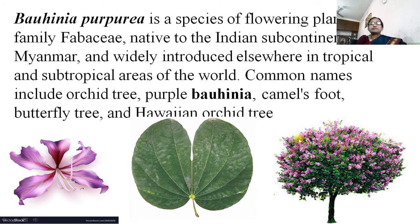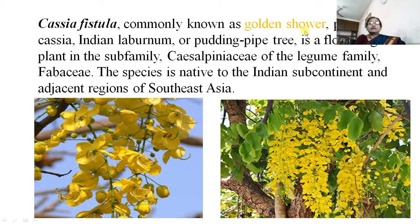Cassia fistula: as mentioned earlier, it has beautiful hanging racemes when the tree blooms, bearing many fragrant flowers. It is commonly known as golden shower, purging cassia, Indian laburnum, or pudding pipe tree. The species is native to the Indian subcontinent and adjacent regions of Southeast Asia.